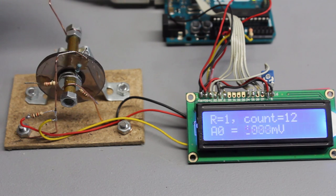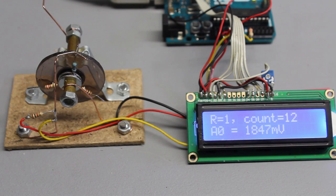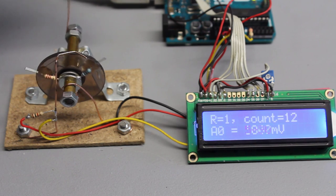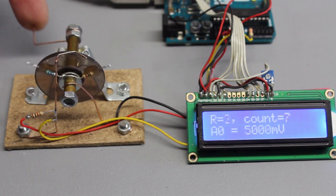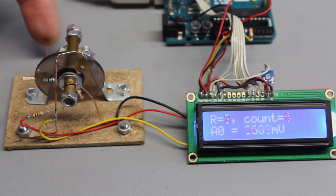Same as before, contact bounce has to be considered in the software code and that physical property sets the limit for the rotational speed of the sensor. A full turn is divided into 3 steps.